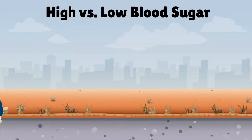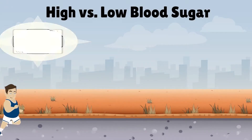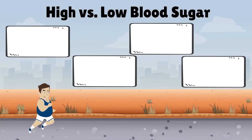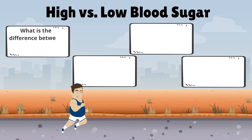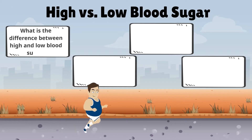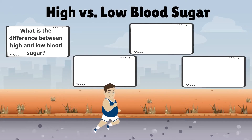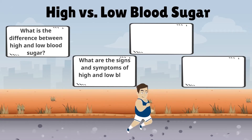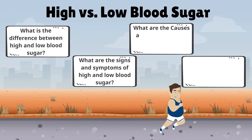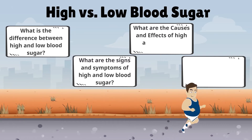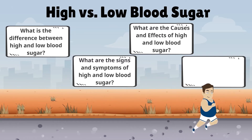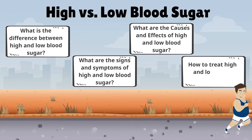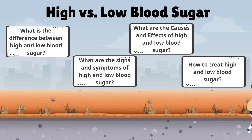In summary, in Lesson 3: High vs. Low Blood Sugar, you now know: what is the difference between high and low blood sugar, what are the signs and symptoms of high and low blood sugar, what are the causes and effects of high and low blood sugar, and how to treat high and low blood sugar.